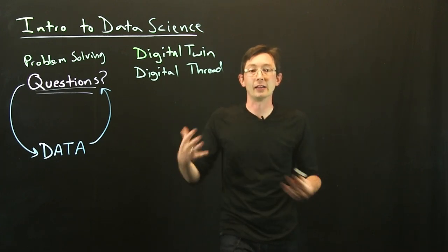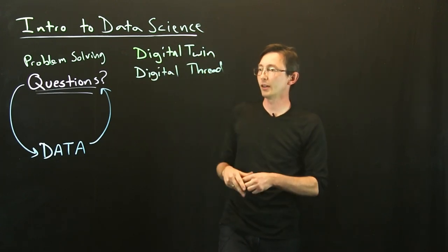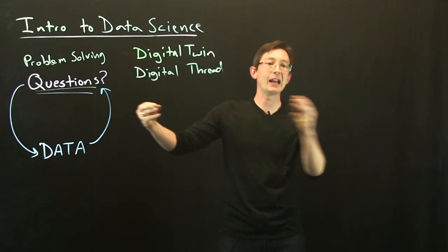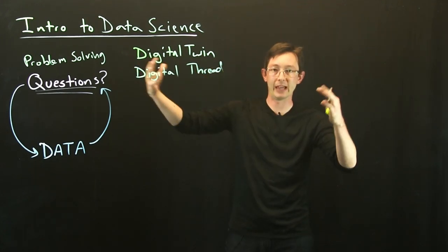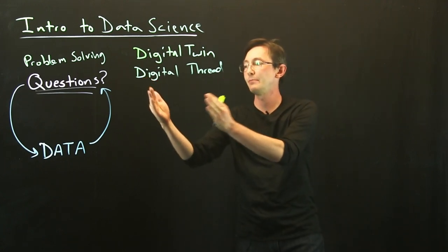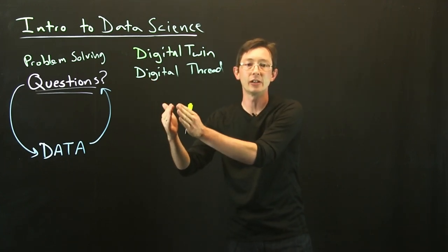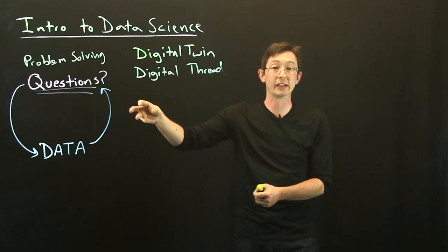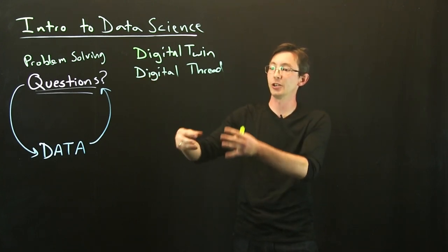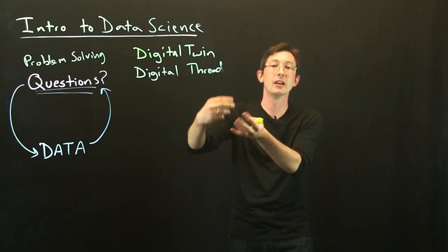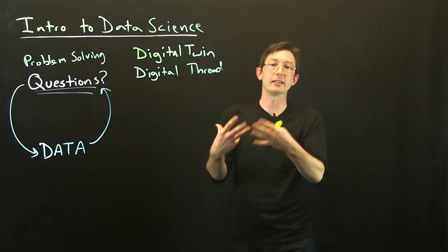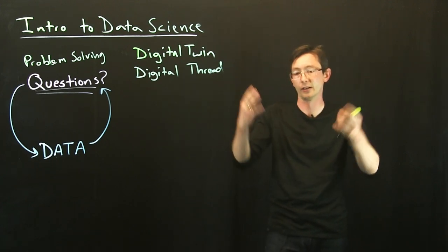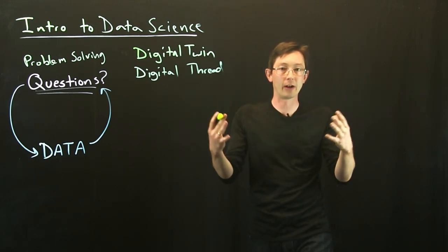The digital thread is the data pipeline that enables that digital twin. The digital thread means that you're going to be collecting information throughout the entire process from design to sourcing of materials all throughout the supply chain to when those start to be assembled and created into this large assembled object, like think of a turbine or an aircraft.